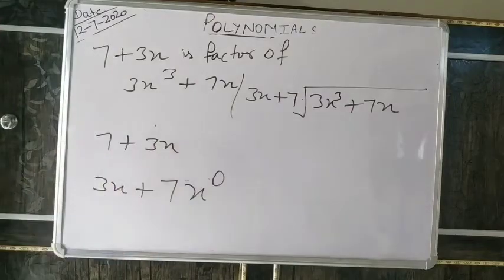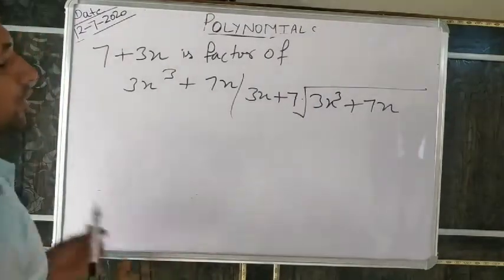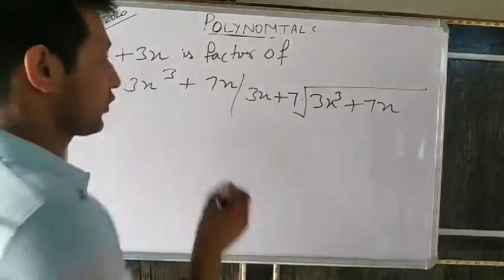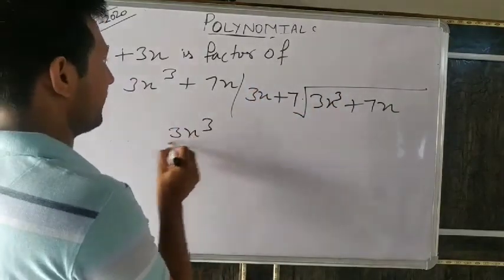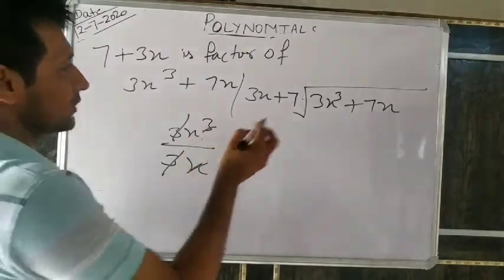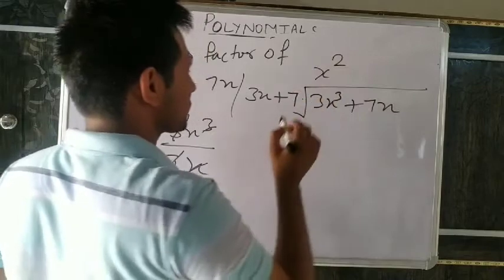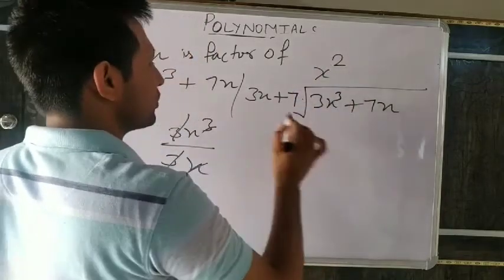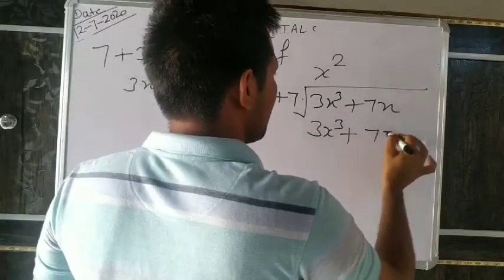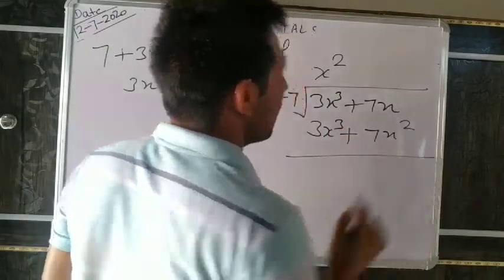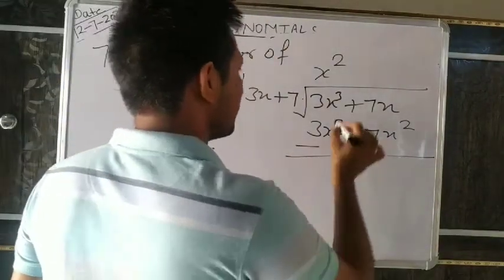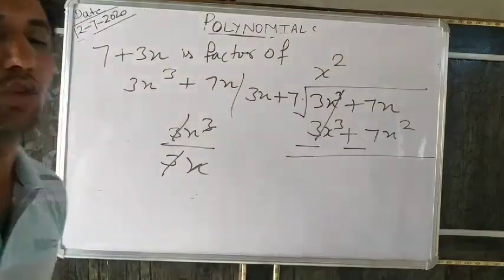Now divide 3x³+7x by 3x+7. What number do we write in quotient — when multiplied by 3x it becomes 3x³? 3x³ divided by 3x: three cancels three, x cancels one x. So x² remains. Write x² in quotient. Multiply x² by (3x+7): x² times 3x gives 3x³, and x² times 7 gives 7x². Change sign: positive becomes negative, positive becomes negative.